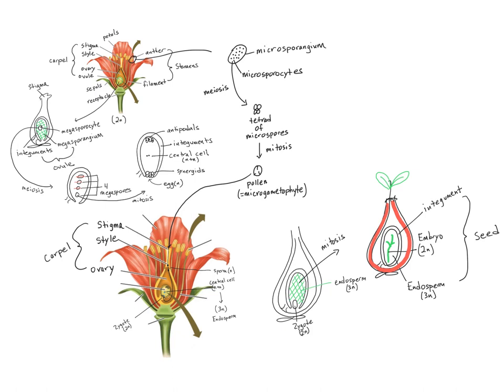Obviously what stands out about angiosperms from other plants is the formation of fruit and the presence of a flower. Remember the seeds are enclosed and protected not only by the integument layers which will eventually form the seed coat, but they're also surrounded by fruit in order to facilitate dispersal.